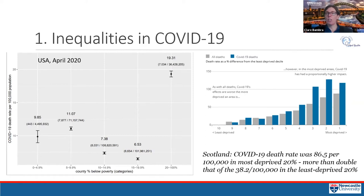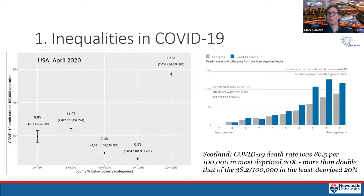UK data at the neighbourhood level (around 3,000 households) shows a relative risk of over 100 in the bottom 30% most deprived neighbourhoods, again roughly double compared to the most affluent. Scottish data from the first wave (March–July 2020) shows a COVID-19 death rate of 86 per 100,000 in the most deprived 20% of neighbourhoods, compared to 38 per 100,000 in the least deprived.